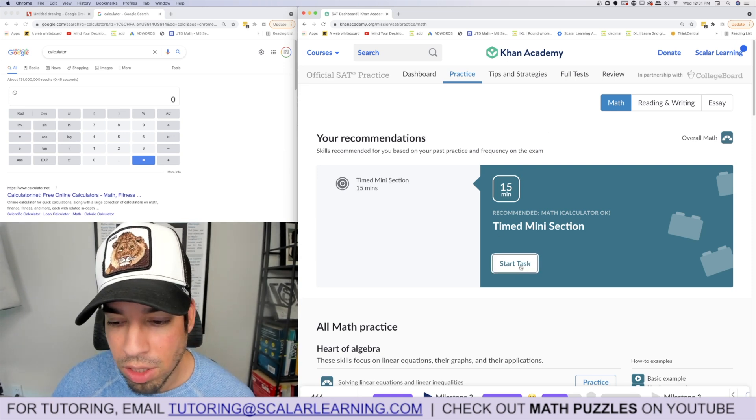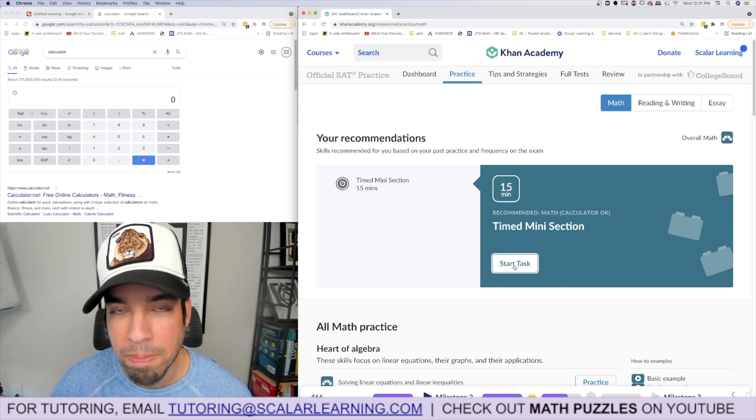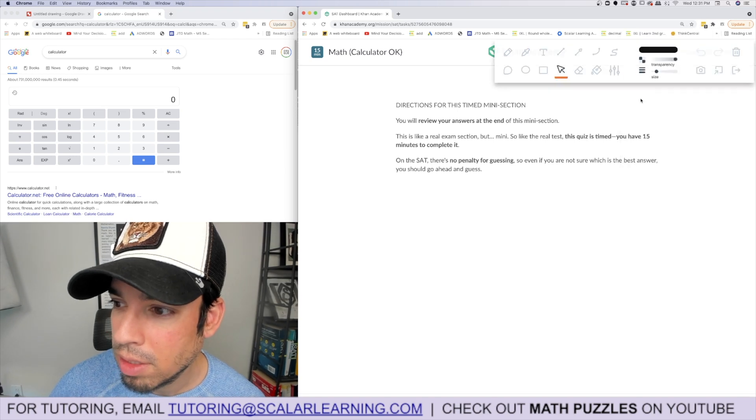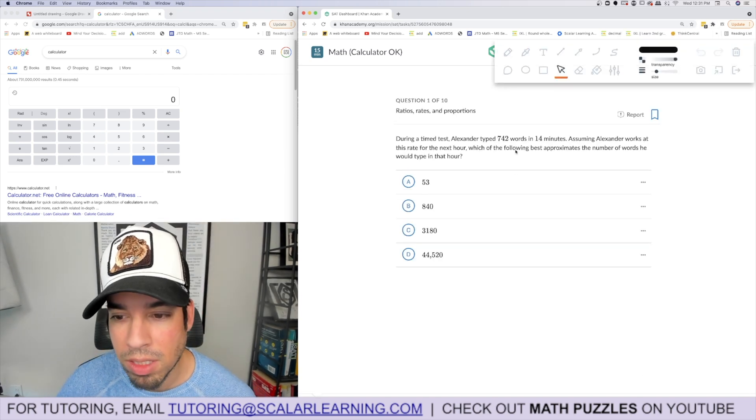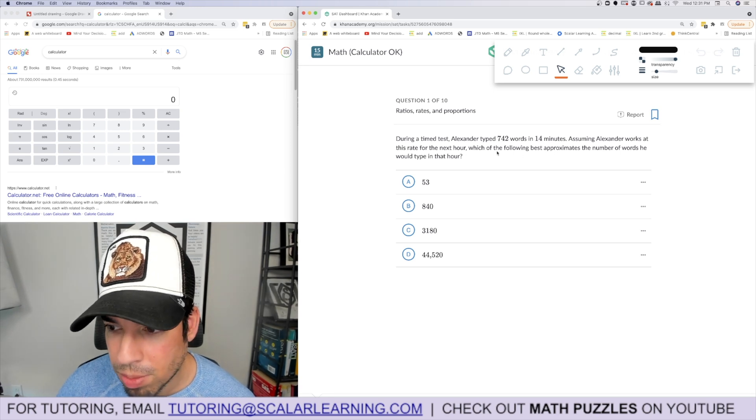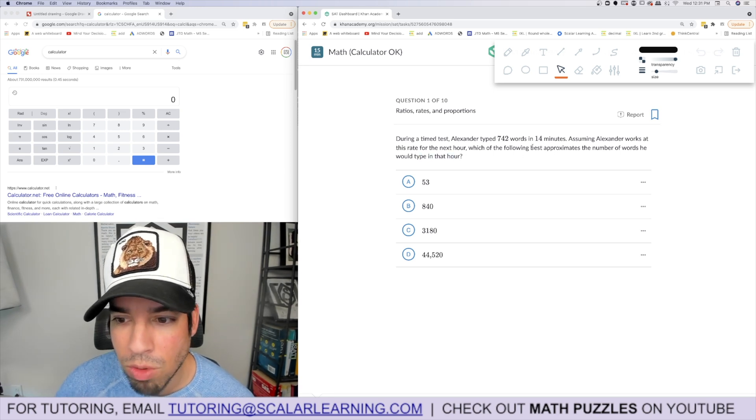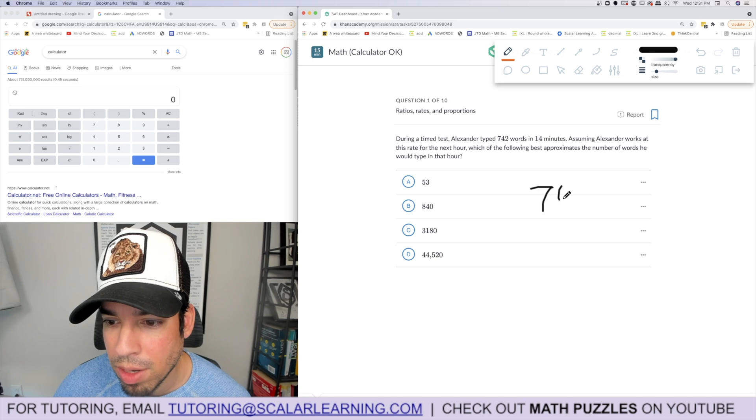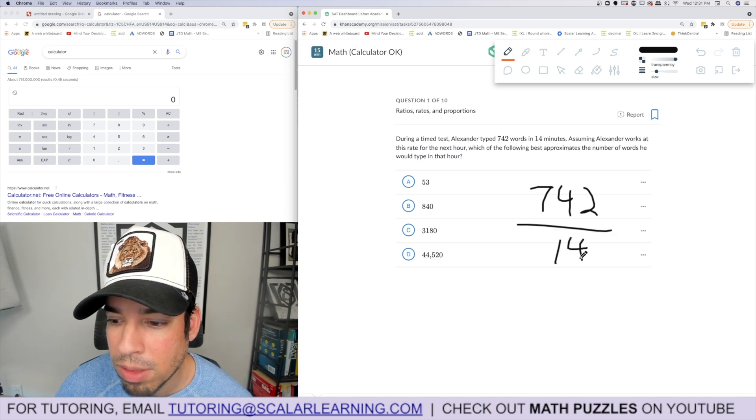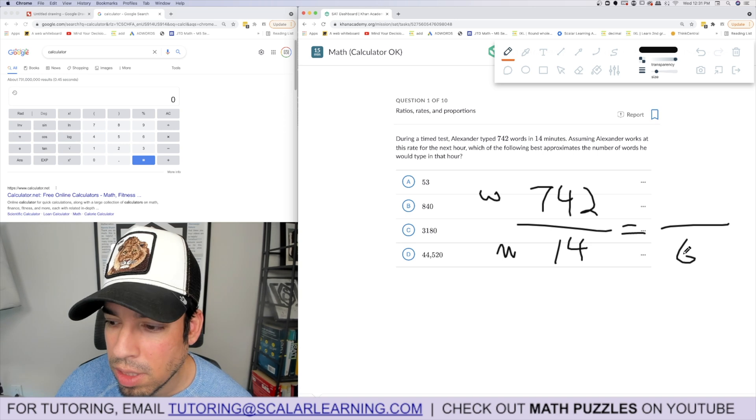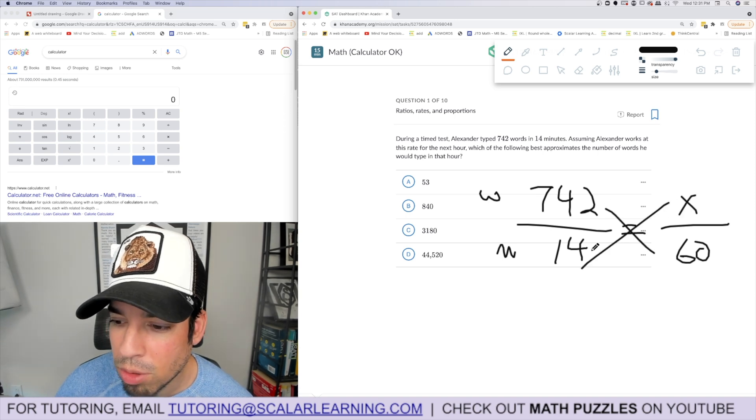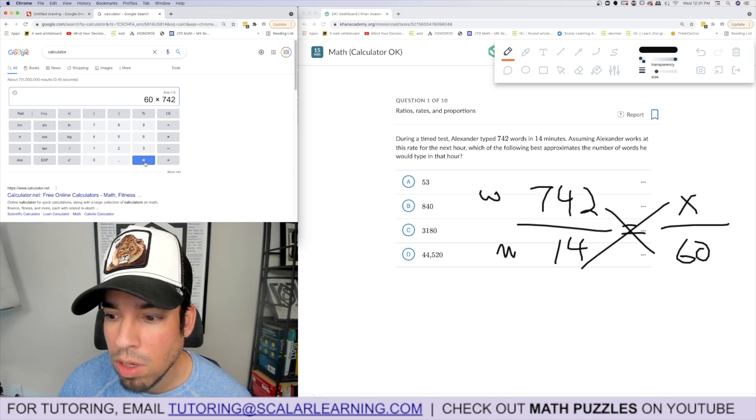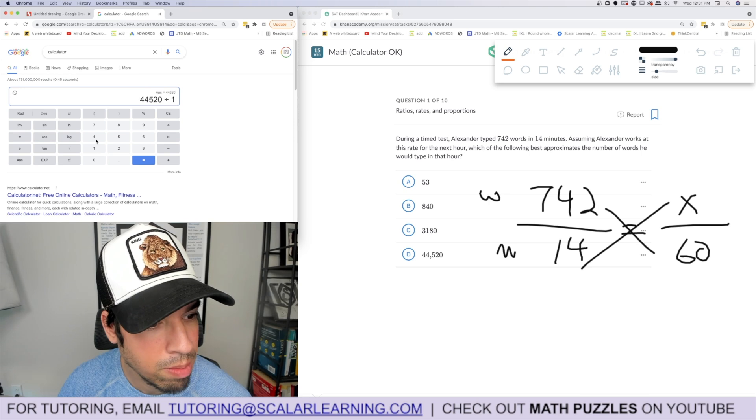During a typing test, Alexander typed 742 words in 14 minutes. Assuming the approximate number he would type in an hour, let's do a proportion. 742 words in 14 minutes equals x words in 60 minutes. Cross multiply: 60 times 742 divided by 14 equals 3180. Done. Nice rates, ratios and proportions question.